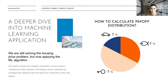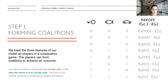So how do we apply this to machine learning applications, and how do we calculate this payout distribution for ML algorithms? We need to assess the marginal contribution of every feature conditional on other features, as the Shapley values calculated by averaging the obtained data will signify the contribution of the said feature. Let's talk step by step — it's going to be only two steps, but we need to be careful. The first step is treating our features as players, and players form coalitions to win the game. So the first step is named accordingly: forming coalitions.